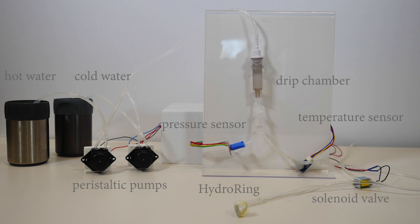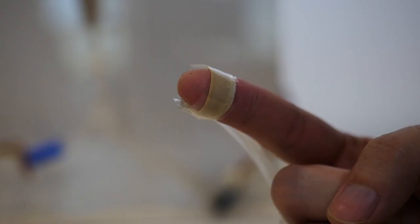As water flows from the drip chamber through the latex tube, the tube applies pressure to the finger pad. A thin layer of clear, low-density polyethylene constrains the expansion of the tube towards the finger.